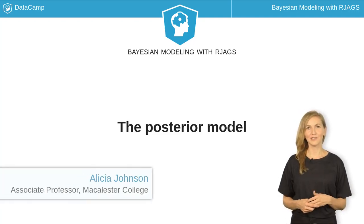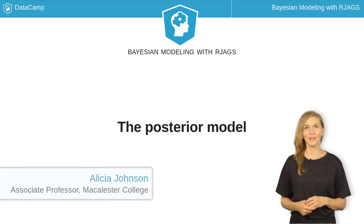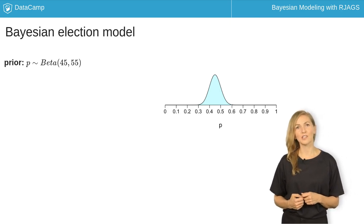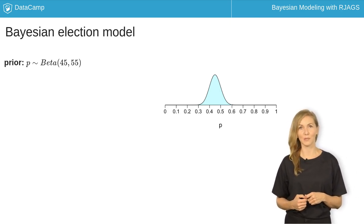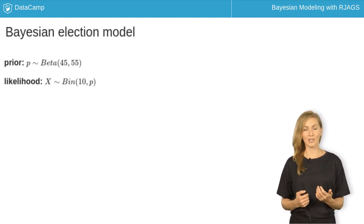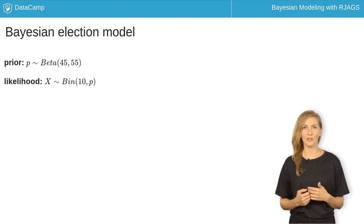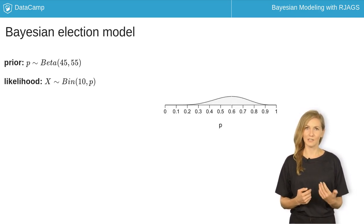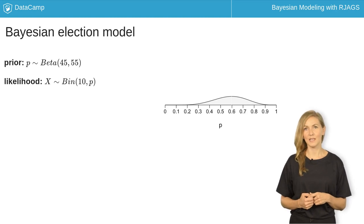You now have the pieces in place to construct a posterior model of p, your underlying support in the upcoming election. First, the Beta(45,55) prior model suggested that your support hovered around 45%. Subsequently, you polled n=10 voters and recorded the number x that support you. Conditioned on your support p, the likelihood model of x is binomial. Upon observing x=6, the corresponding likelihood function indicates that values of support p near 0.6 are the most compatible with your poll.